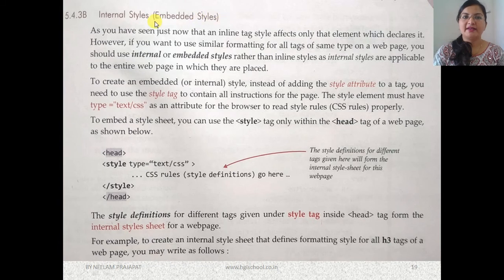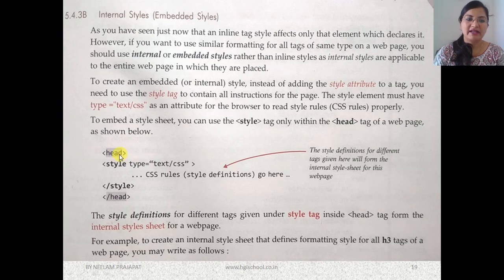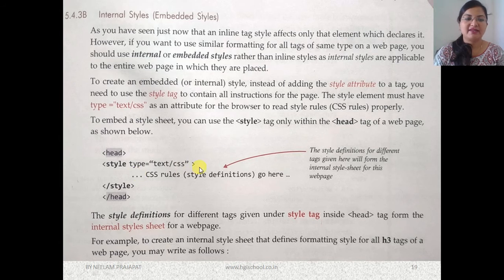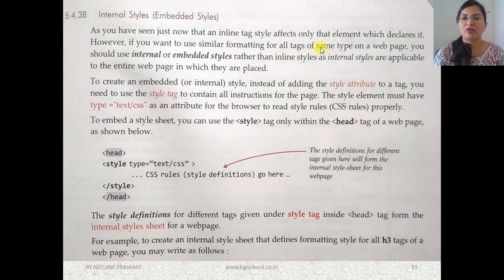Internal styles are also known as embedded styles because they are embedded into the HTML page, specifically inside the head section. The style opening and closing tags go there, with the type attribute set to text/css. While inline styles affect only the element that declares them, if you want to use similar formatting for all tags of the same type on a web page, you should use internal or embedded styles.